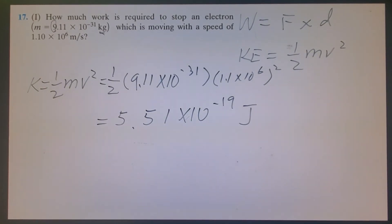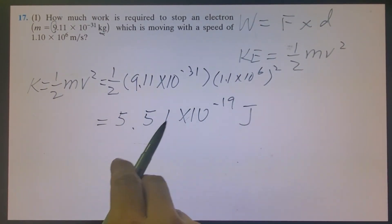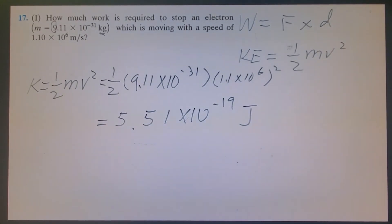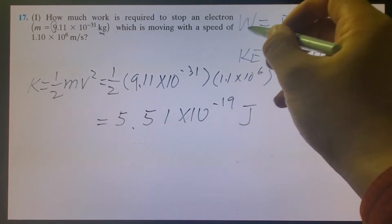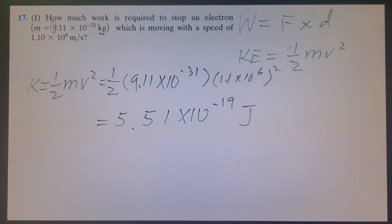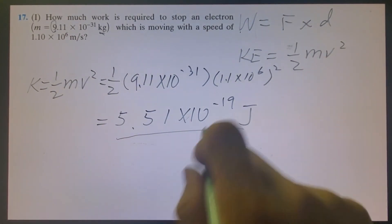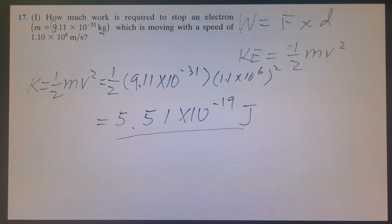Now, the question asks how much work is required to stop this one. That means the work energy must be equal to this energy in order to stop it. So the work will also equal this one. And later on, you will know this is called conservation of energy.